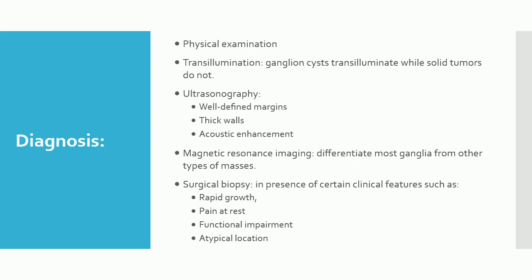Magnetic Resonance Imaging: In patients with occult wrist pain, MRI can differentiate most ganglia from other types of masses. Surgical Biopsy: The combination of transillumination, ultrasonography, and MRI are generally sufficient to distinguish between a benign ganglion cyst and other potentially neoplastic soft tissue masses. However, the presence of certain clinical features such as rapid growth, pain at rest, functional impairment, and atypical location — e.g., proximal or distal to the wrist rather than overlying the wrist — should prompt consideration for a surgical biopsy.